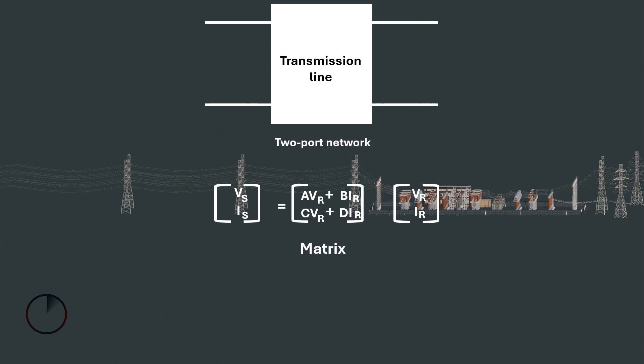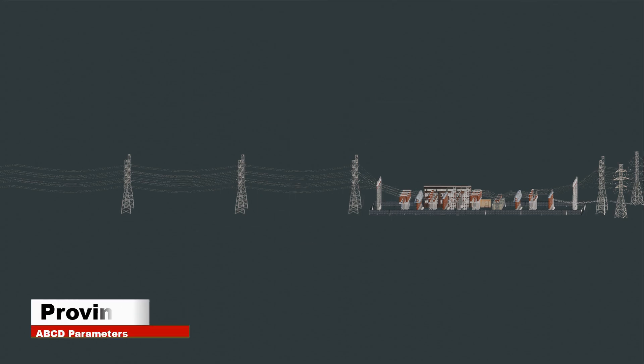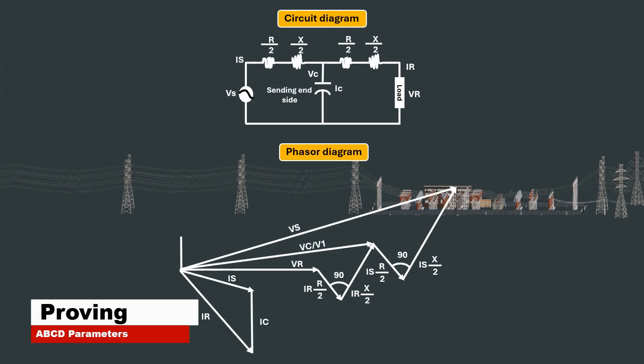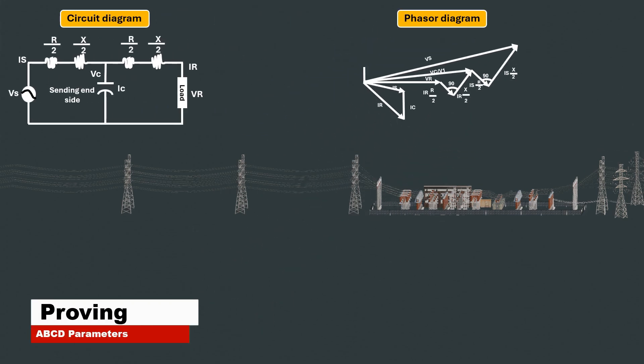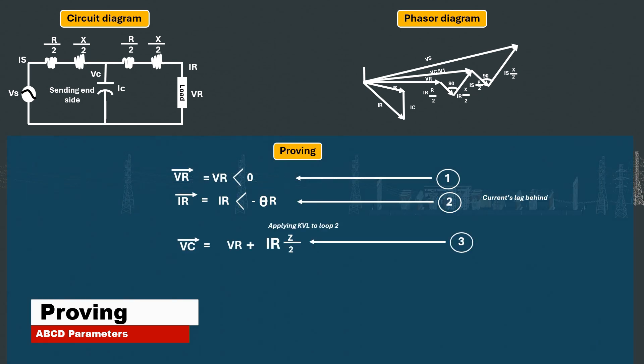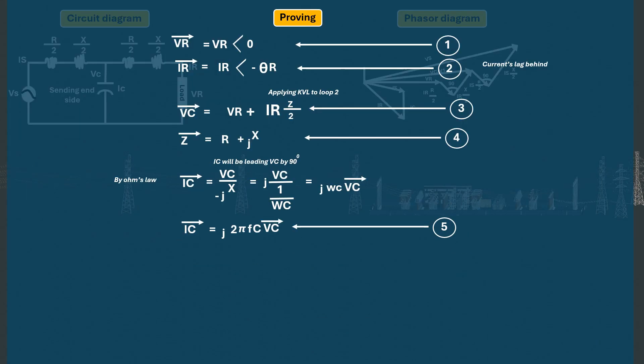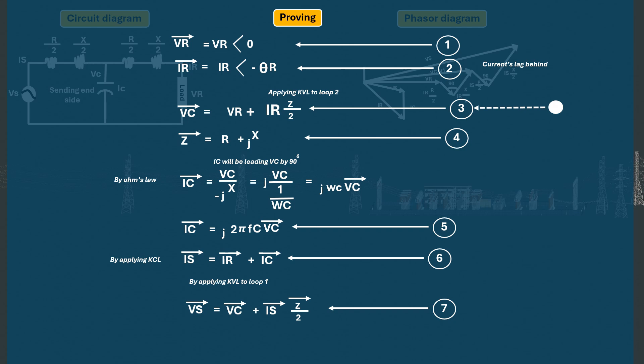In layman's terms, ABCD parameters describe the mathematical relation between the sending end and the receiving end voltages and currents. It is on that note that we will start deriving the equations of the ABCD parameter. Since we are considering deriving the equation for a nominal T power transmission line, we can refer to the previous series, using equation 3 and equation 7 respectively.